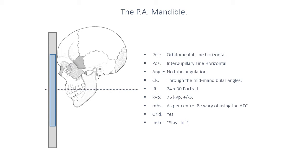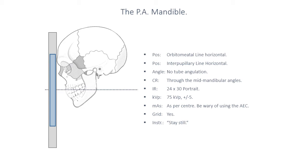The head is positioned such that the patient's nose and forehead is against the image. You should collimate superiorly to include the entirety of the external auditory meatus, which is the patient's ear hole level, and all the way down to the patient's mental symphysis — both of those surface anatomy structures should be well known to you. This projection is performed on a 24 by 30 portrait with about 75 kVp.